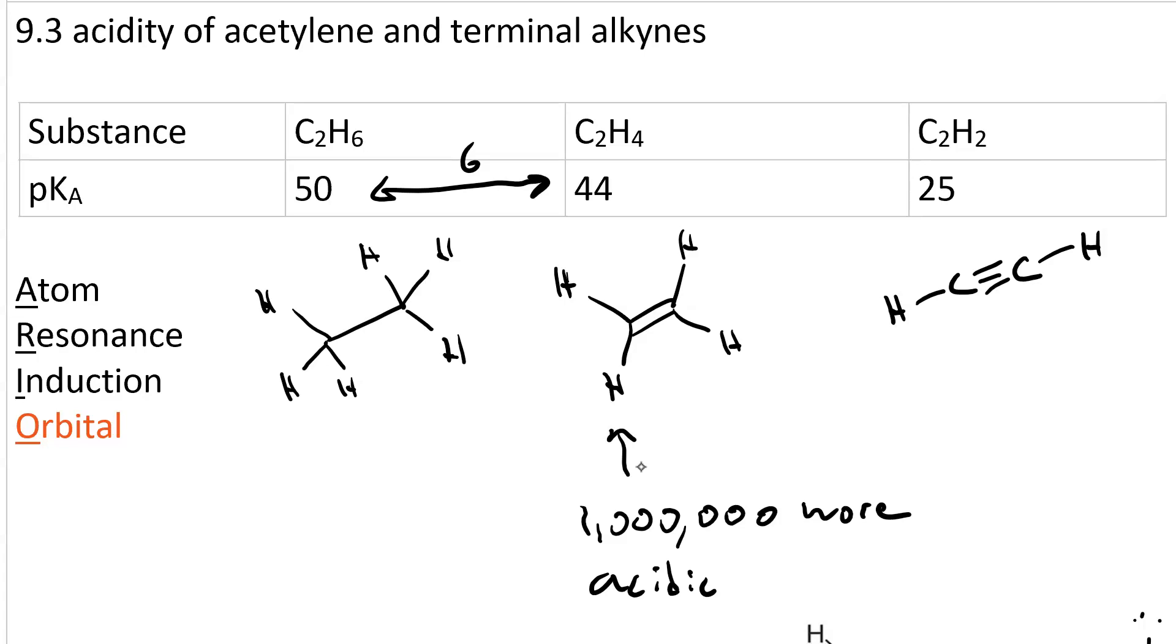I'm not even going to try to write the number for the difference in acidity for the ethyne. It is 10 to the 25th times more acidic. With a pKa of 25, it's still not a strong acid, but it's way more acidic than ethane.